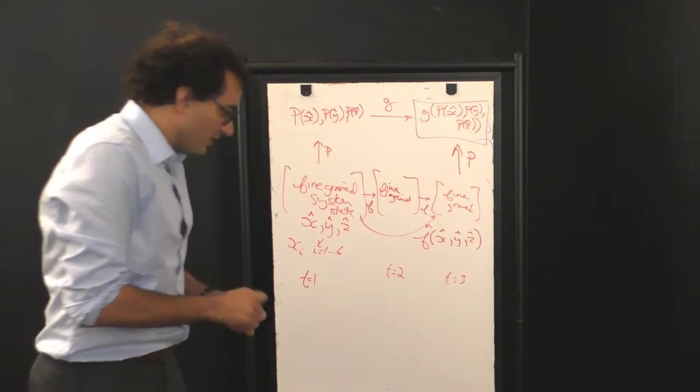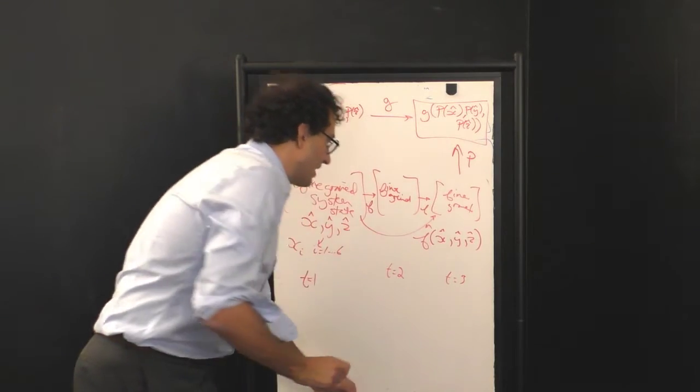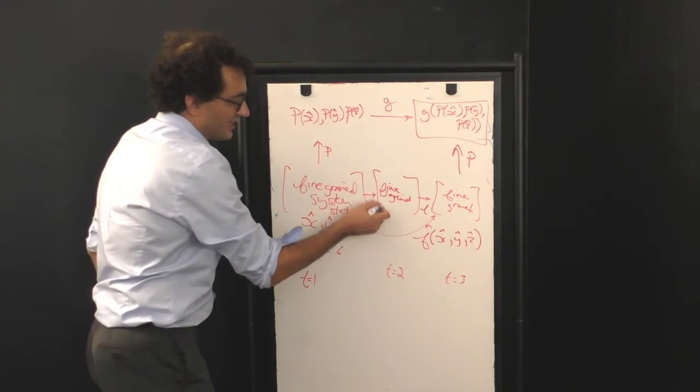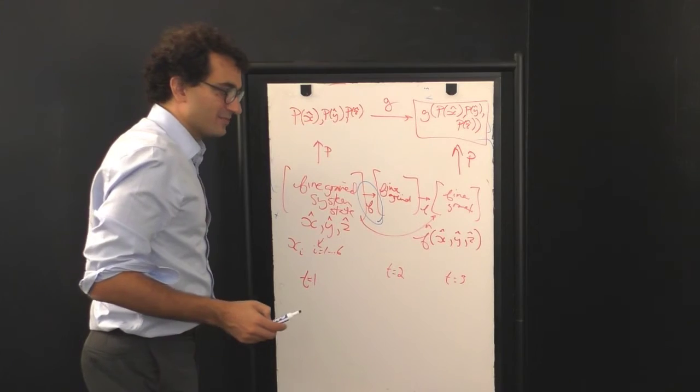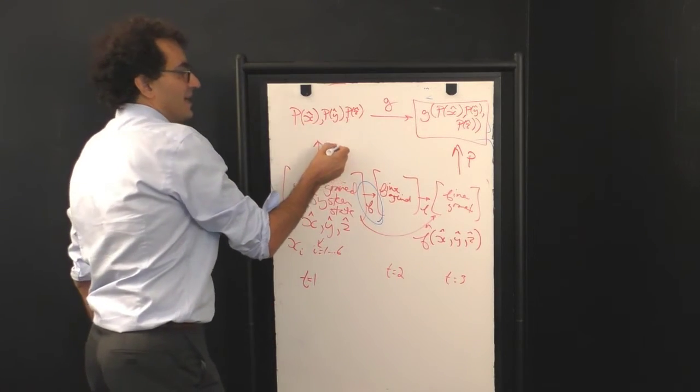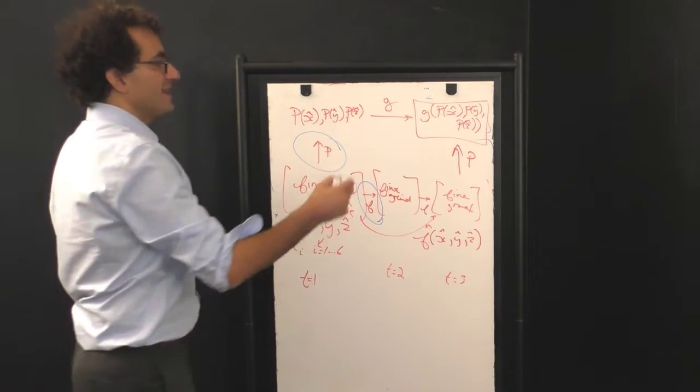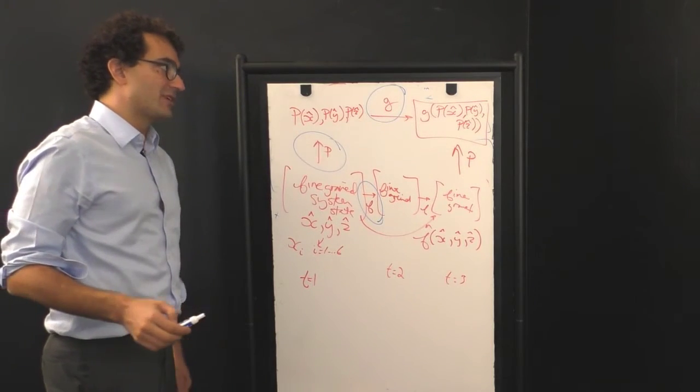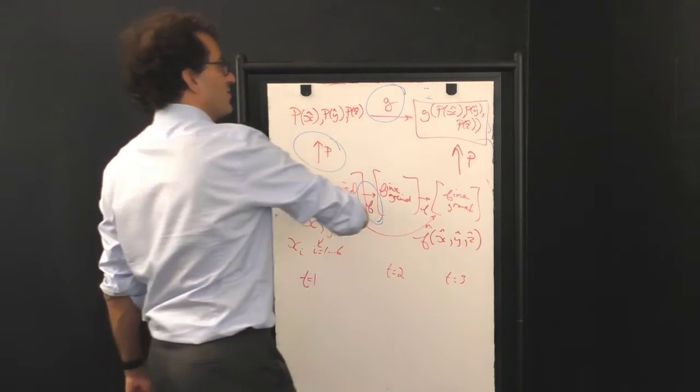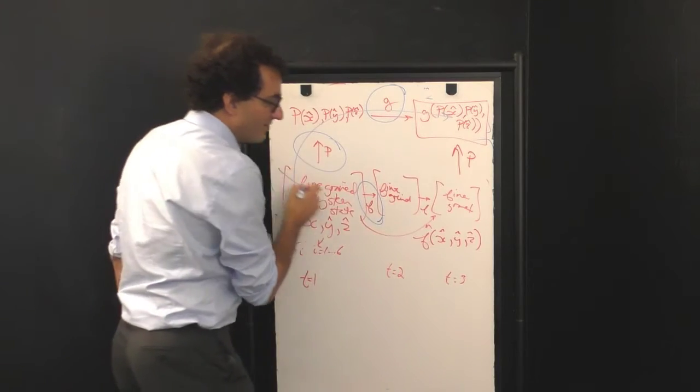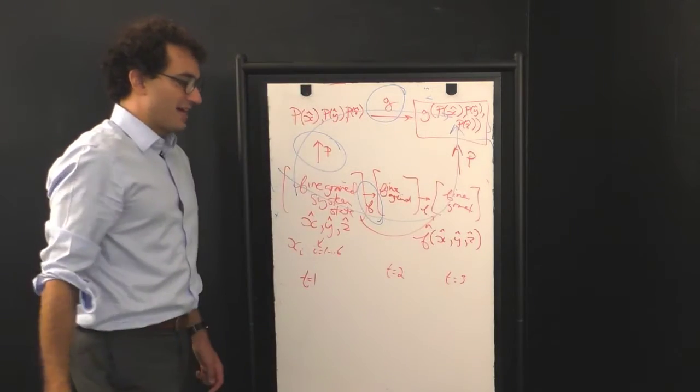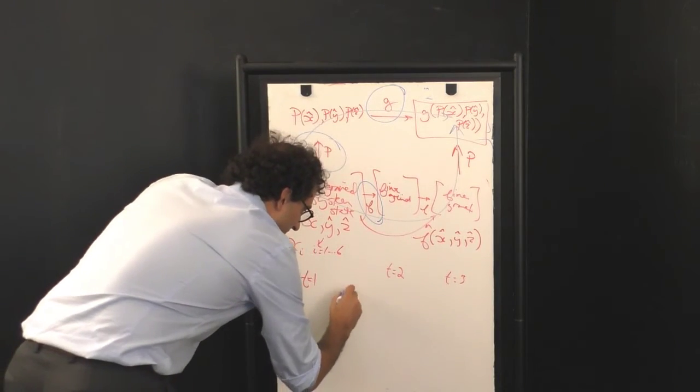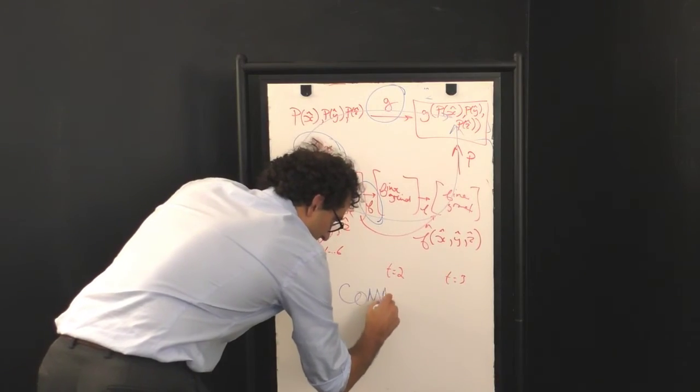So, our goal now will be given a particular cellular automata f at the fine-grained level. Can we find a projection operator p and a coarse-grained evolution operator g, such that if you go along this path, it's equivalent to going along that path? In other words, can we make this diagram, in the technical language, commute?